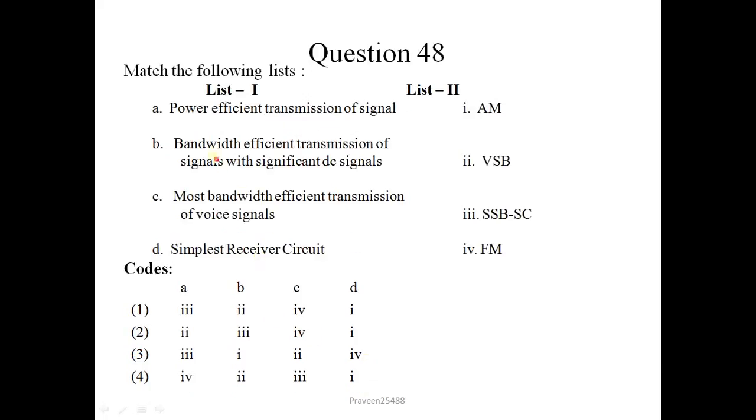Next question is: Power efficient transmission of signal will match with the last two. Power efficient transmission of signal is FM. Bandwidth efficient transmission of signal with significant DC signal is VSB, which is vestigial sideband. Most bandwidth efficient transmission of voice signal is SSB-SC, which is single sideband suppressed carrier. Simplest receiver circuit is AM. Correct option is 4, 2, 3, 1.